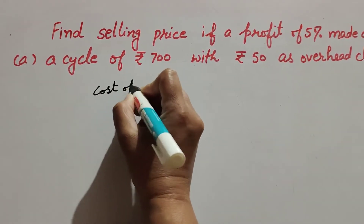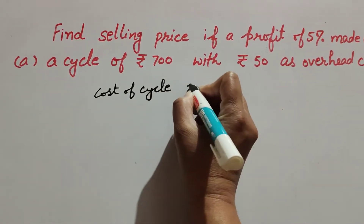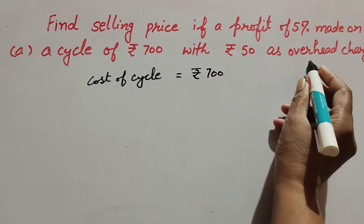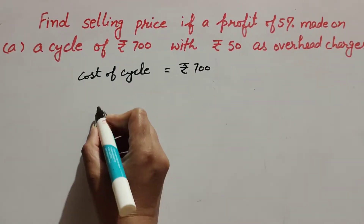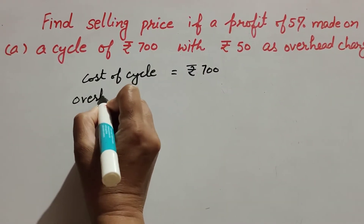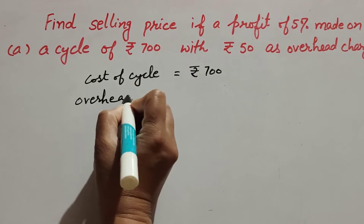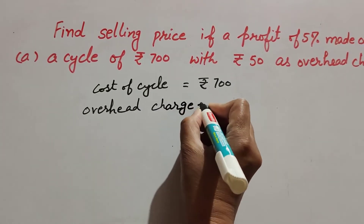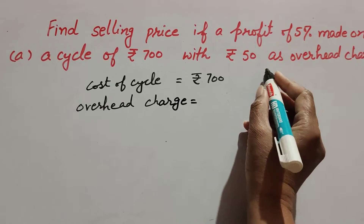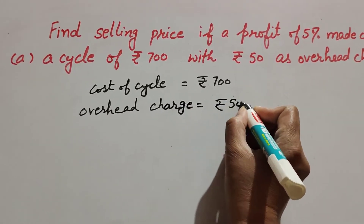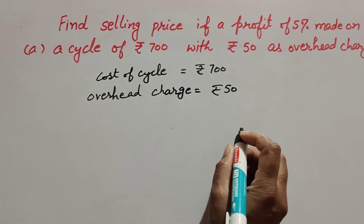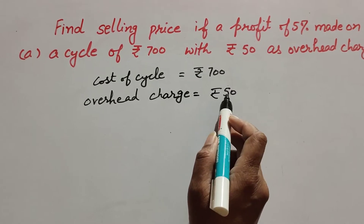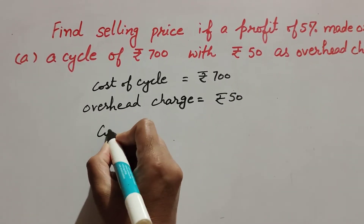The cost of the cycle is given as rupees 700. Then overhead charges are equal to rupees 50. To find the cost price of the cycle, we add both the cost of the cycle and the overhead charges.